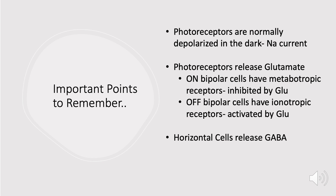Before we get into each problem, there are a couple of things we should keep in mind as we go through each example. The first thing is that photoreceptors are normally depolarized in the dark — this is known as the dark current phenomenon, and it's a result of sodium channels. All you really need to know here is that they're depolarized in the dark.